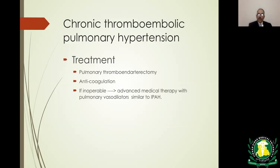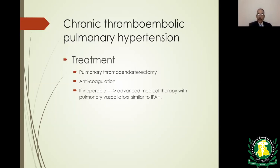For pulmonary hypertension associated with chronic thromboembolic disease, the treatment of choice is pulmonary endarterectomy to remove the clot, plus anticoagulation. If pulmonary endarterectomy cannot be performed, use anticoagulation and start patients on drugs specific for primary PAH such as endothelin receptor antagonists or agents targeting the nitric oxide pathway, especially riociguat.